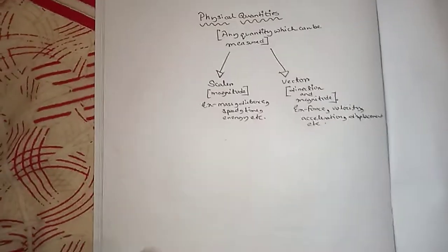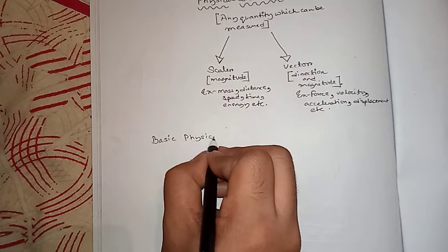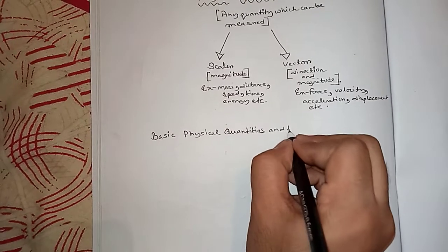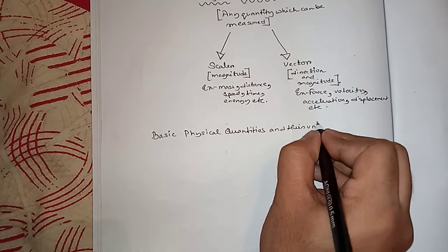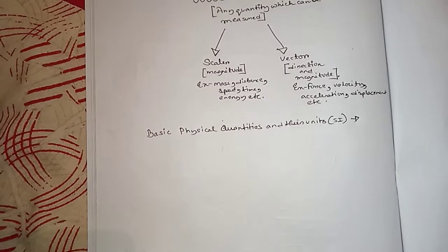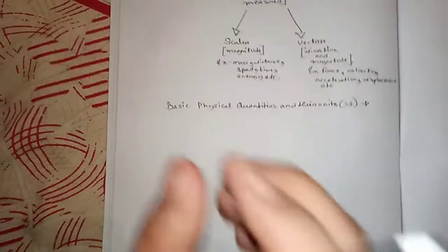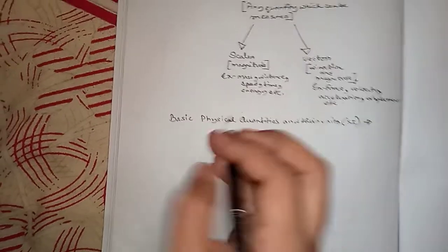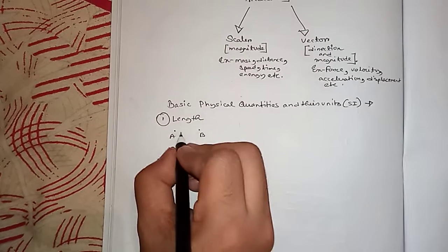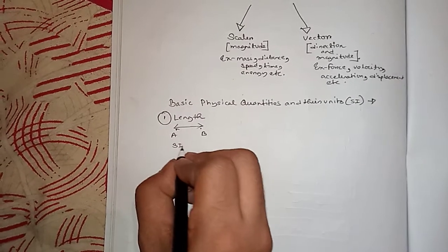Now let's discuss the basic physical quantities and their SI units. These are not only the basic physical quantities — we can also consider them as dimensions, and all the critical formulas can be broken down into these dimensions or smaller parts. First, we have length. Length is the distance between two points. Suppose we have two points A and B and want to measure the distance between them — that distance is length. The SI unit of length is meter.